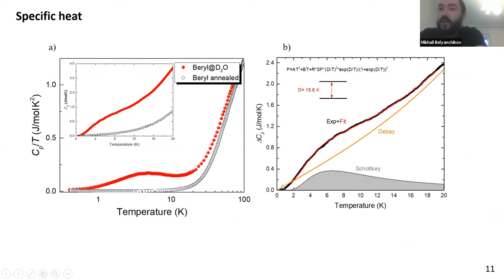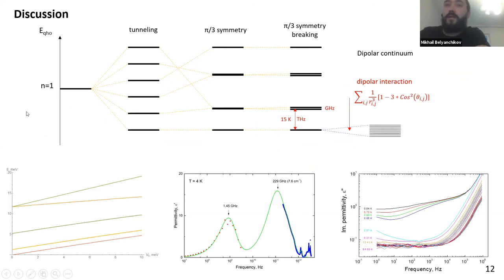There we observed the Schottky anomaly in the specific heat contribution from the water lattice. This Schottky anomaly shows, tells us that in the system there are two distinct levels. We have spacing between them around 15 Kelvin in temperature units. So along with this data, we can plot the next picture. Here we present the level structure of the water molecule in beryl. We just took the simple quantum harmonic oscillator in six-well potential, which gives us splitting to six levels. But after applying the rotational symmetry corresponding to crystal symmetry, we got the degeneracy of four levels, and this gives us four-level structure.